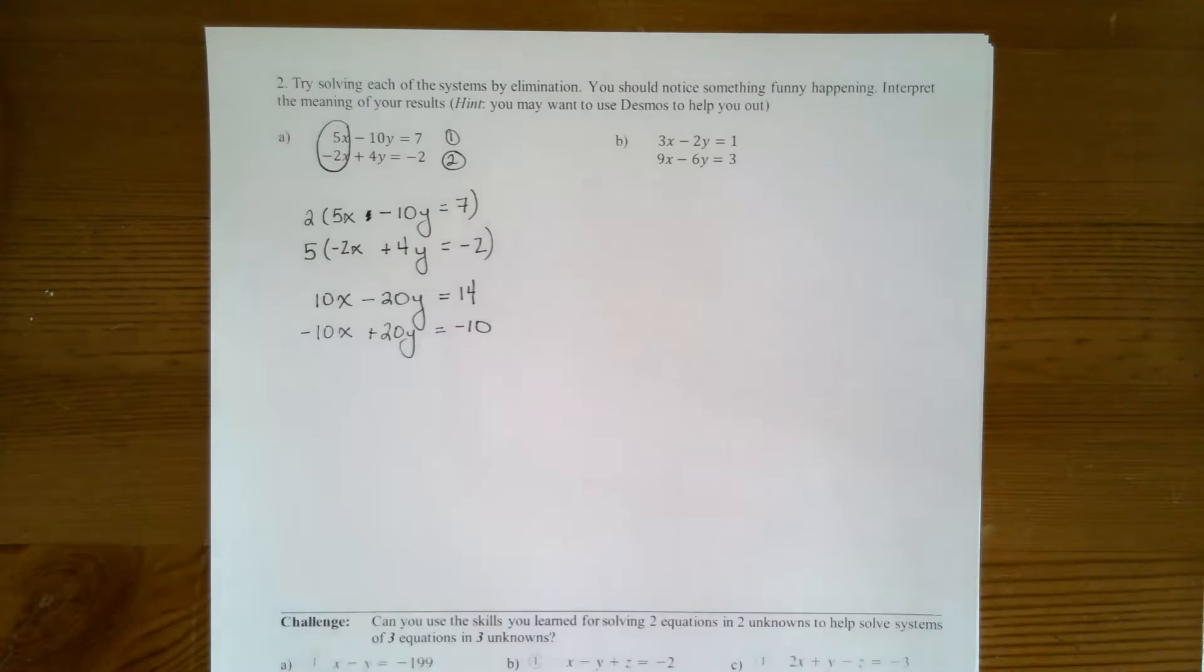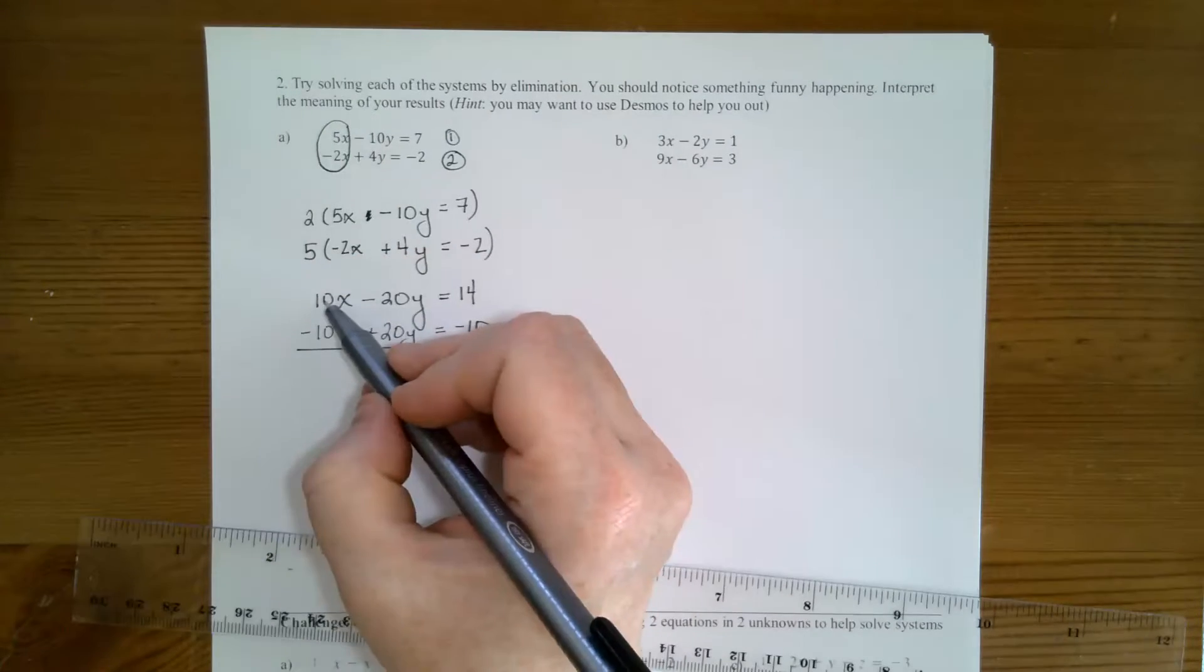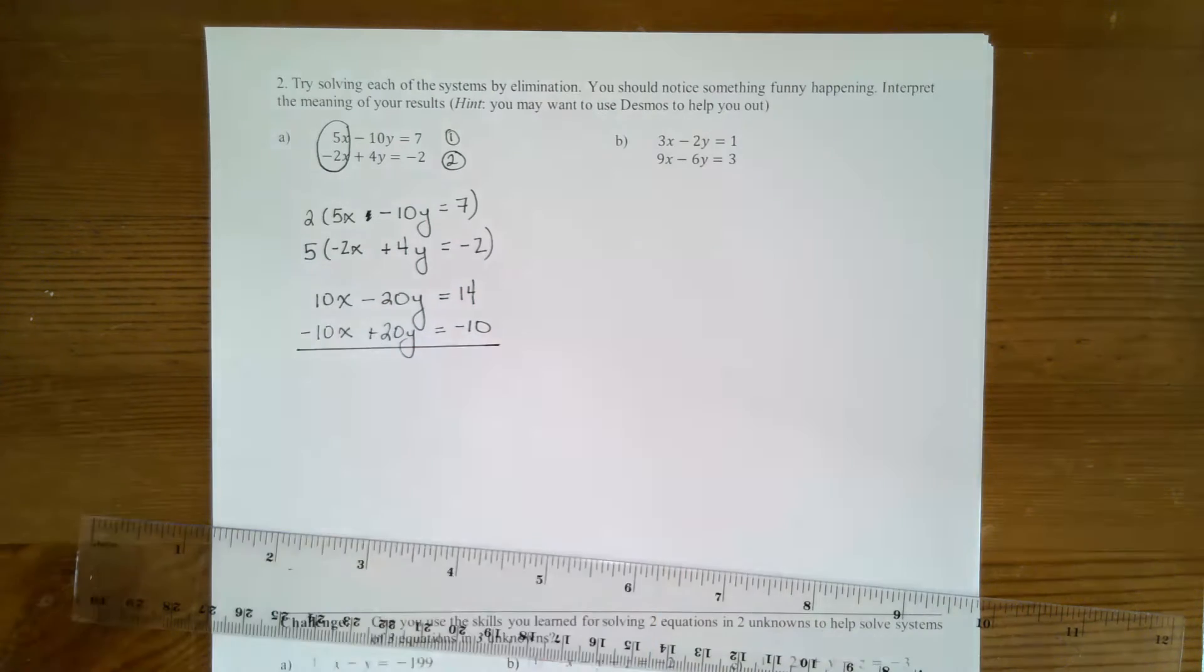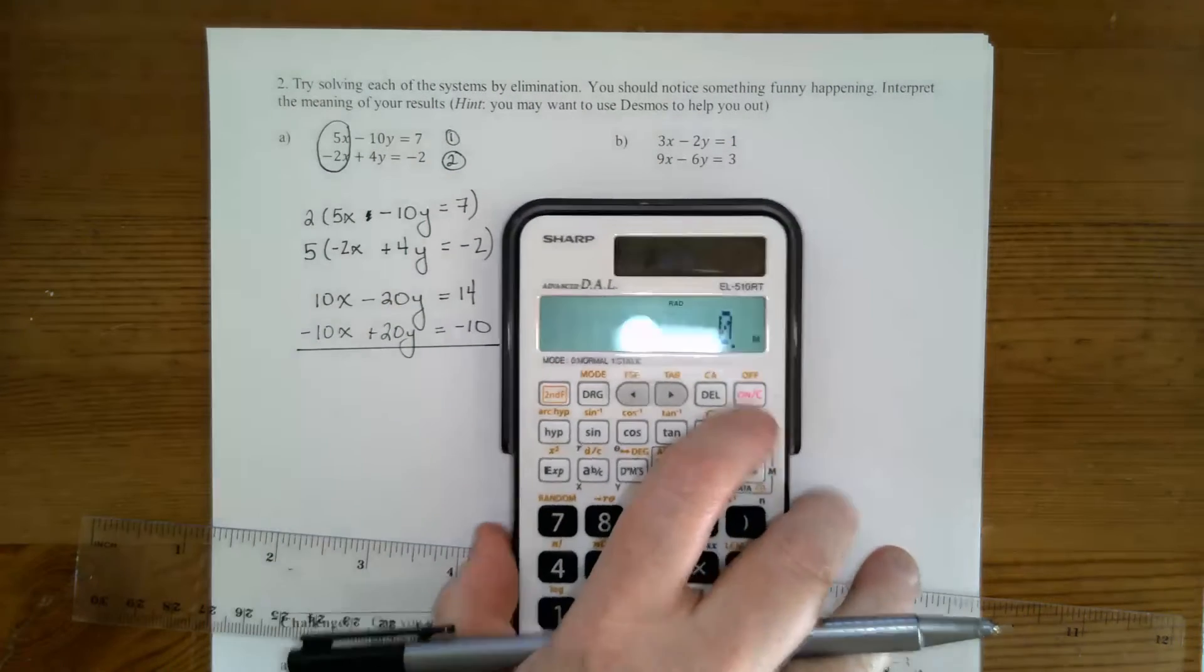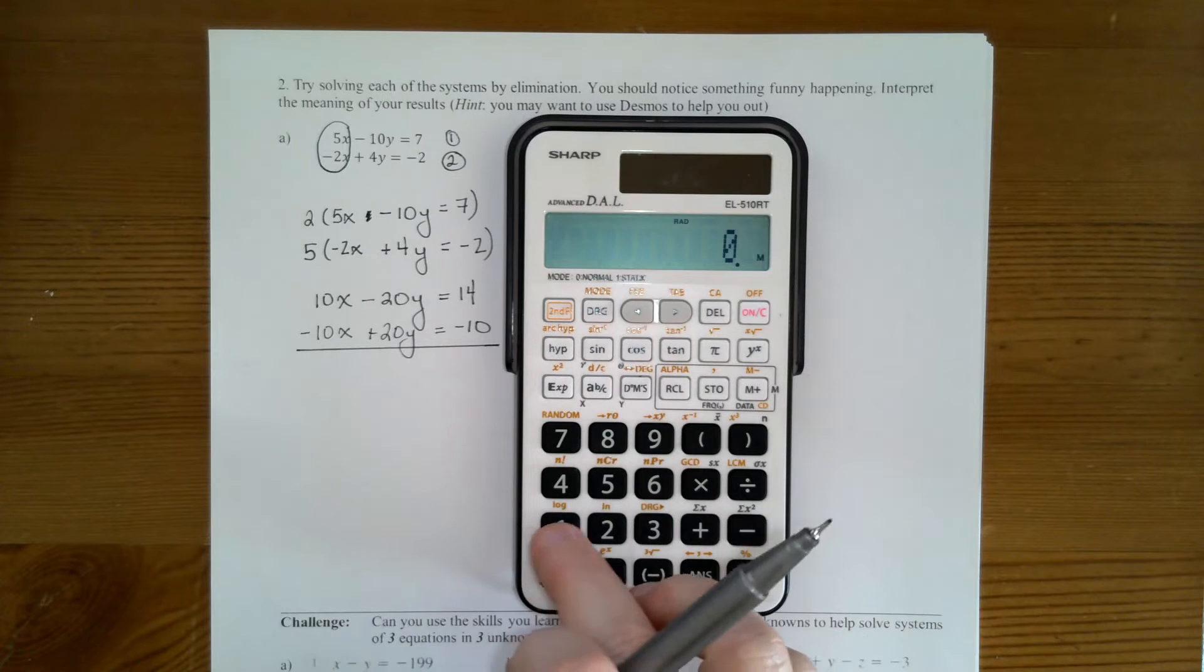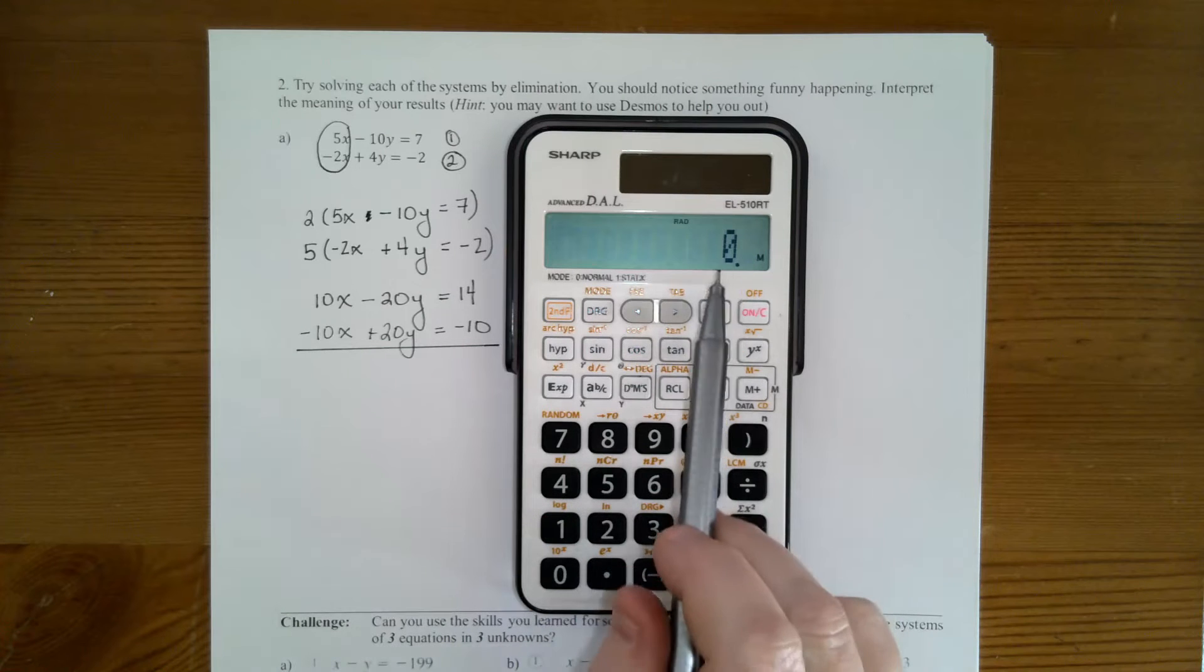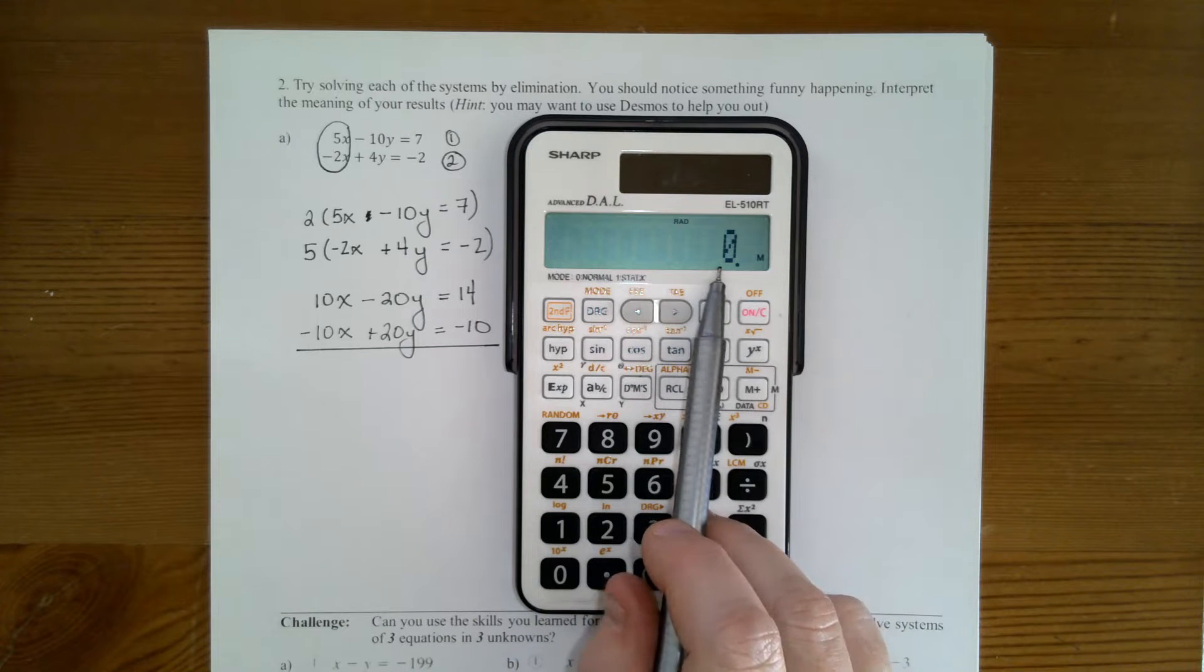I want to eliminate my variable. So I take a look at my x's. I've got different signs, one positive and one negative. If you use your calculator, just double check. If I do 10 plus negative 10, then I get 0. So that means my x's are eliminated.